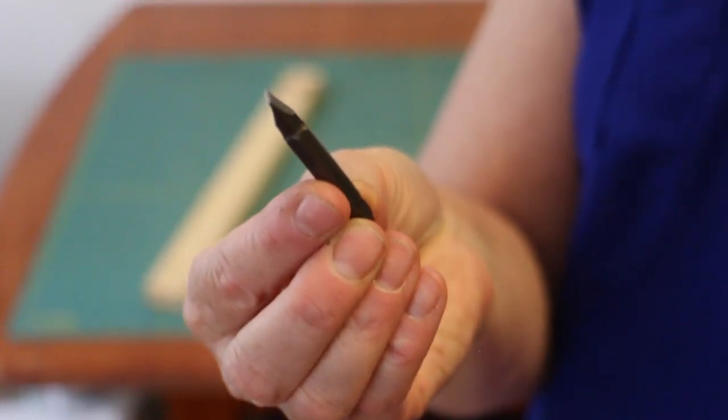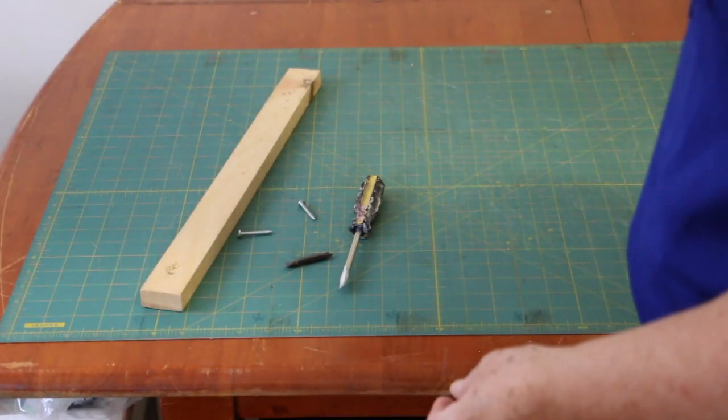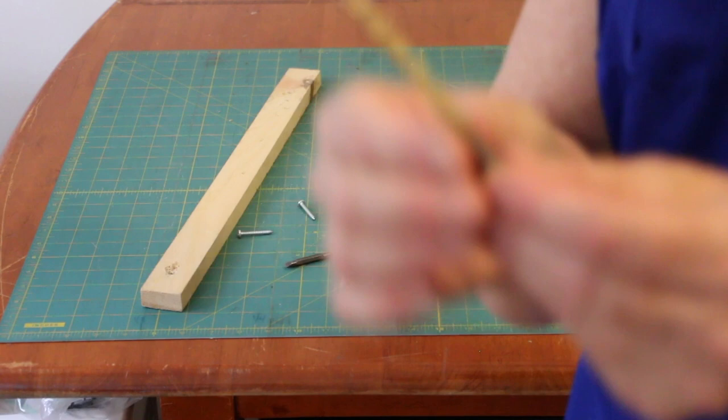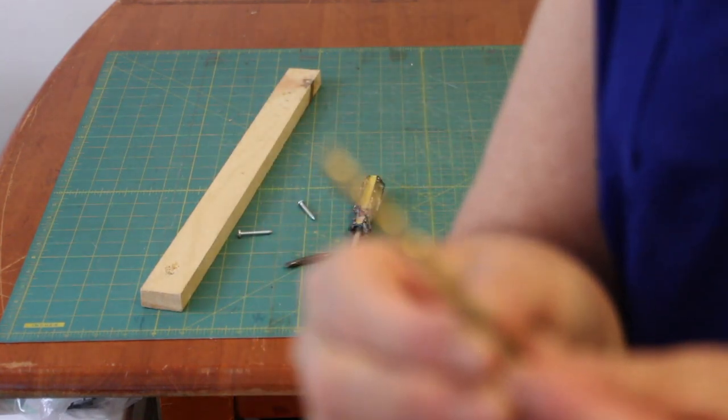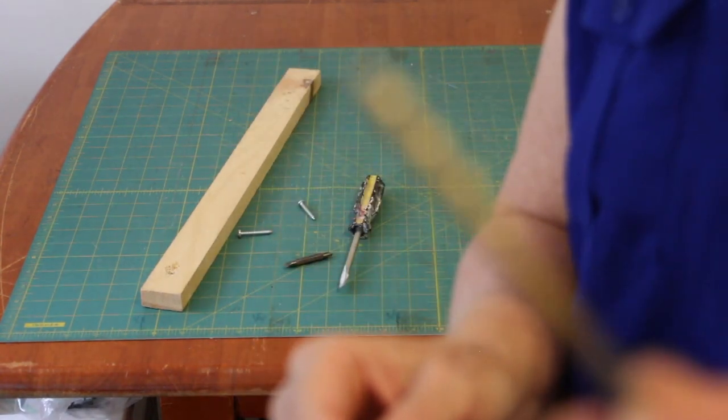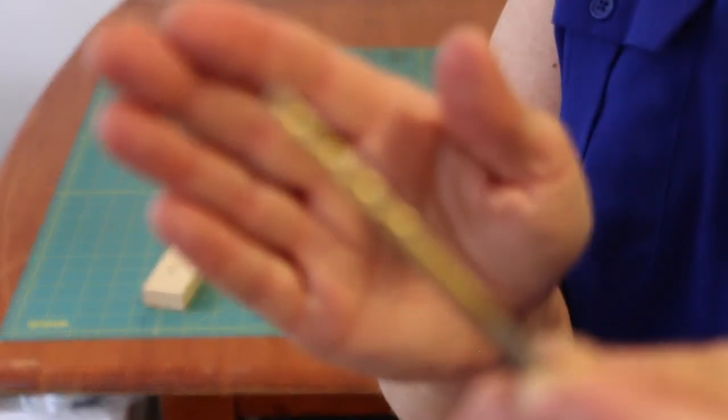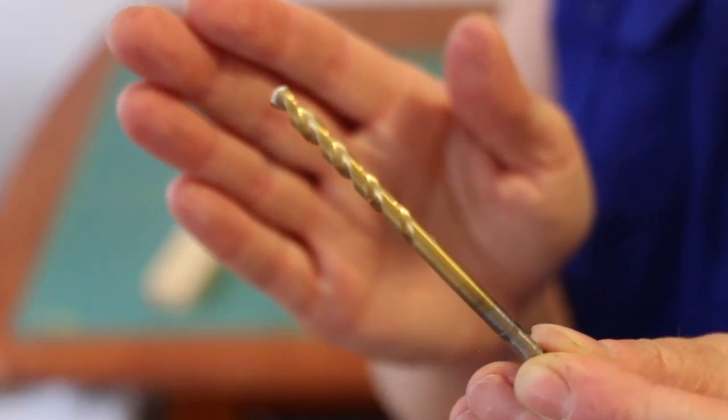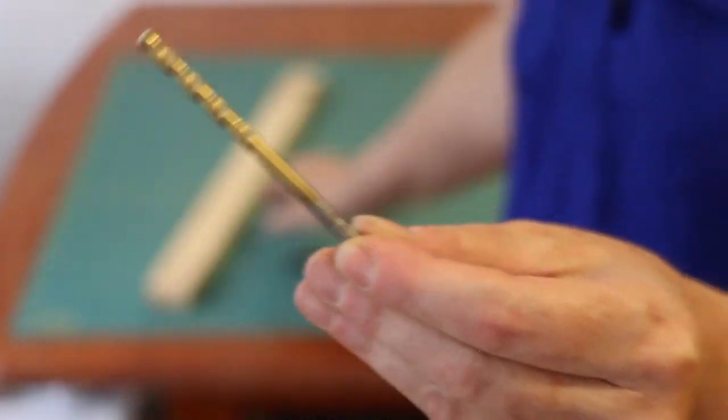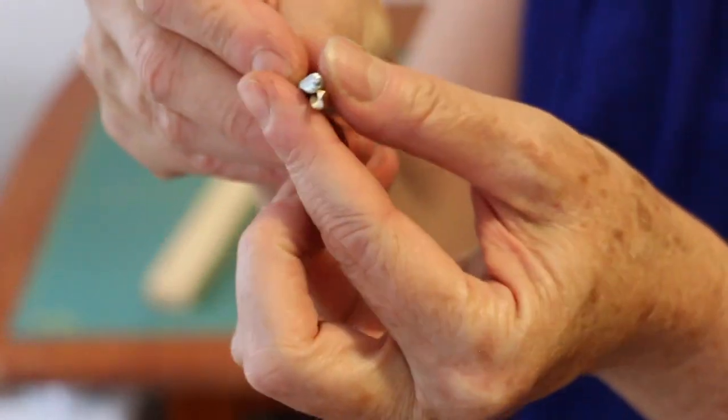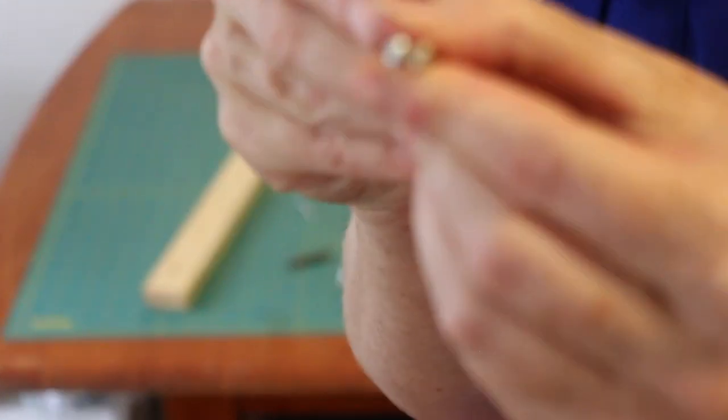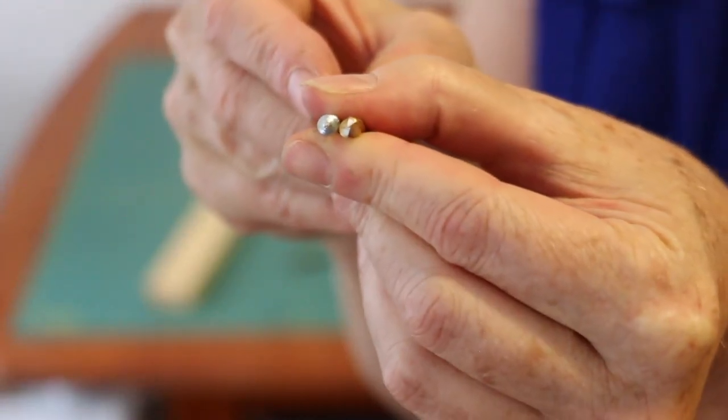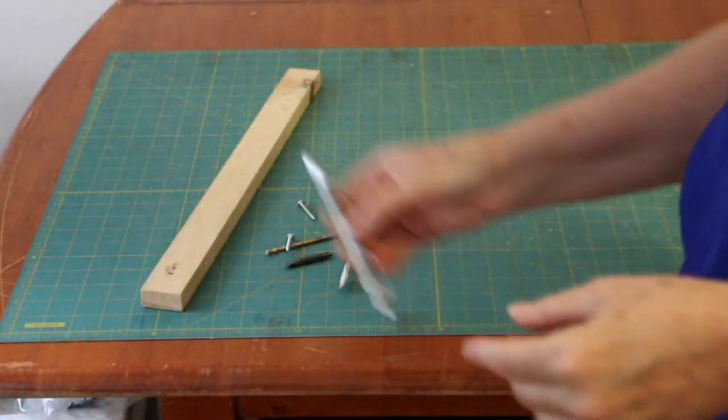Your drill bit needs to be the same diameter as your screws. To test that, you can just hold the screw and the drill bit up side by side and check to see that they're about the same size.